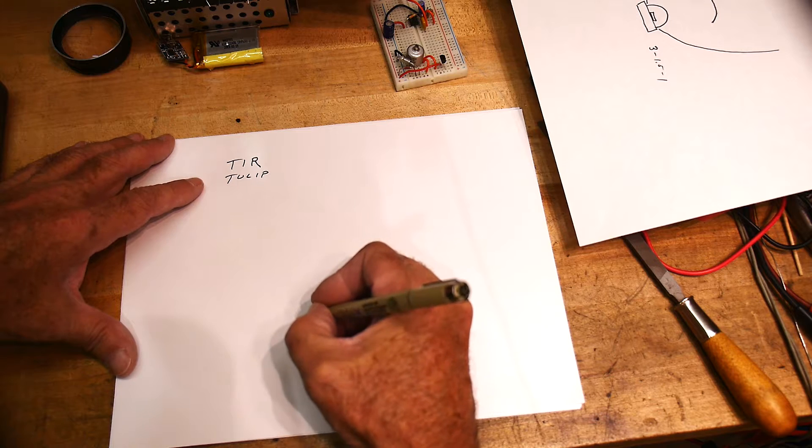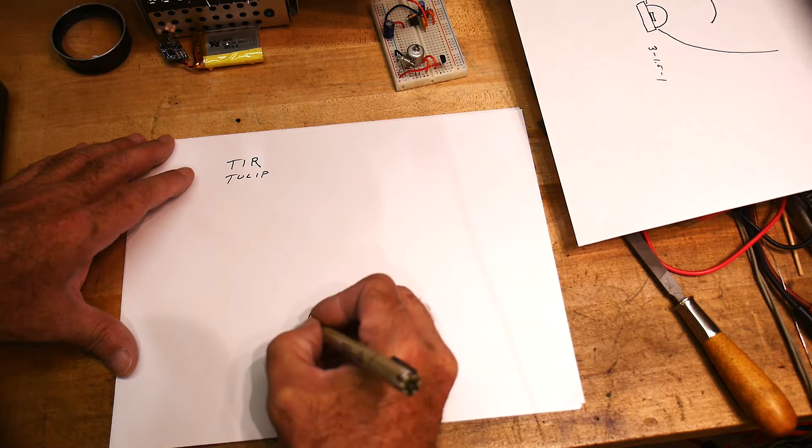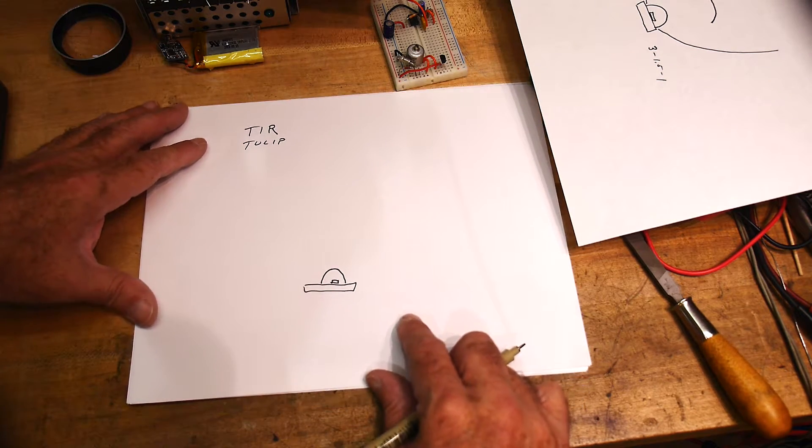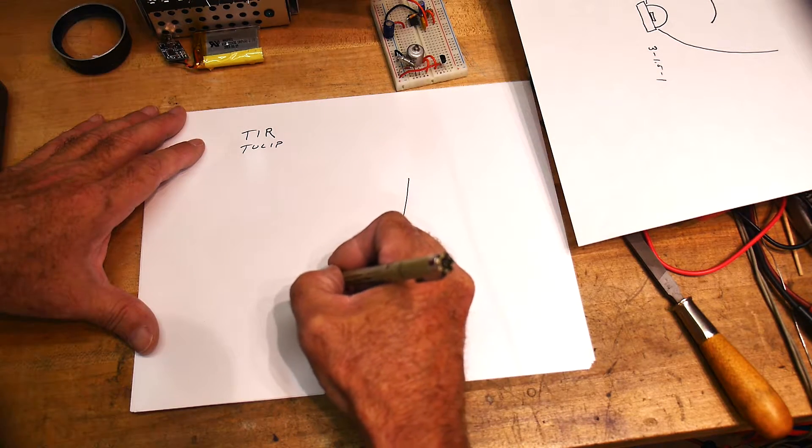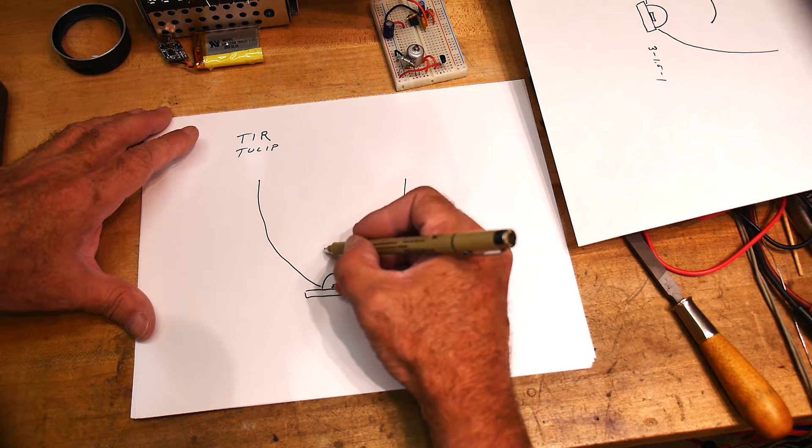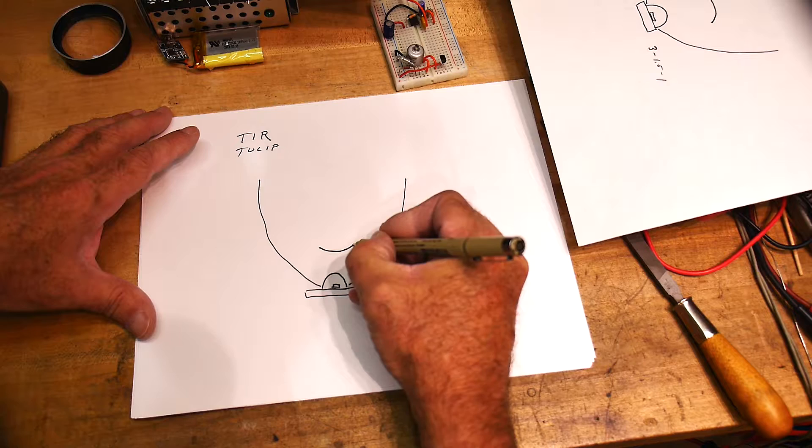So let me start over. Forget that one. Okay, so we're gonna start with an LED—I had to redraw it anyway. We're gonna start out with our LED, and we're gonna start with our reflector. And then here I want to have a lens.